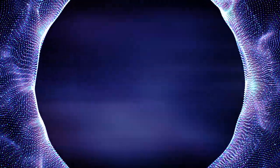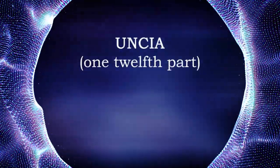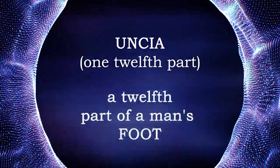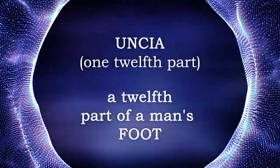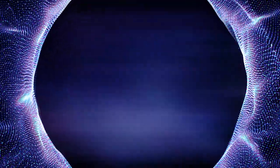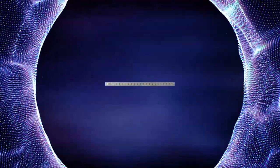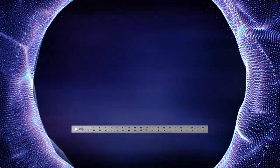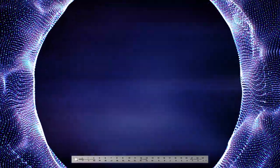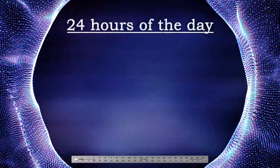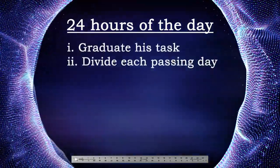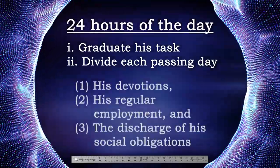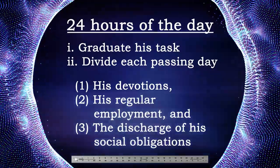The word inch comes from the Latin uncia, meaning one twelfth part of anything, and in this connection it indicates a twelfth part of a man's foot, which was early adopted as a length measure, being of course standardized everywhere. But in the ritual, the twenty-four inch gauge is used as emblematic of time. When the worshipful master gives the entered apprentice his tools, he says that the twenty-four inch gauge represents the twenty-four hours of the day, and it may be used in two ways: to graduate his task, and to divide each passing day, so as to allow of his attending to everything, his devotions, his regular employment, and the discharge of his social obligations.